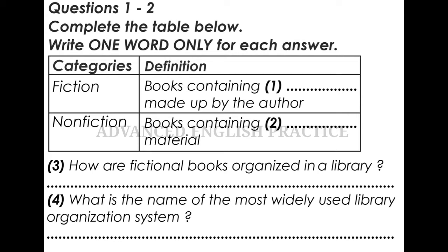All the fictional books in a library are grouped in one section. They are arranged alphabetically by the last name of the author. Many libraries also label the spines of all books of fiction with the letters FIC or F.